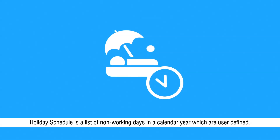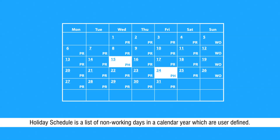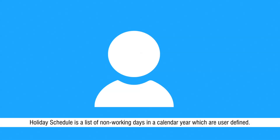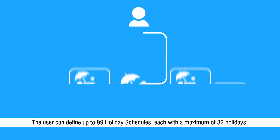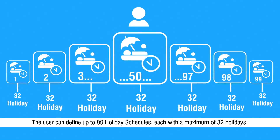Holiday schedule is a list of non-working days in a calendar year which are user defined. The user can define up to 99 holiday schedules, each with a maximum of 32 holidays.